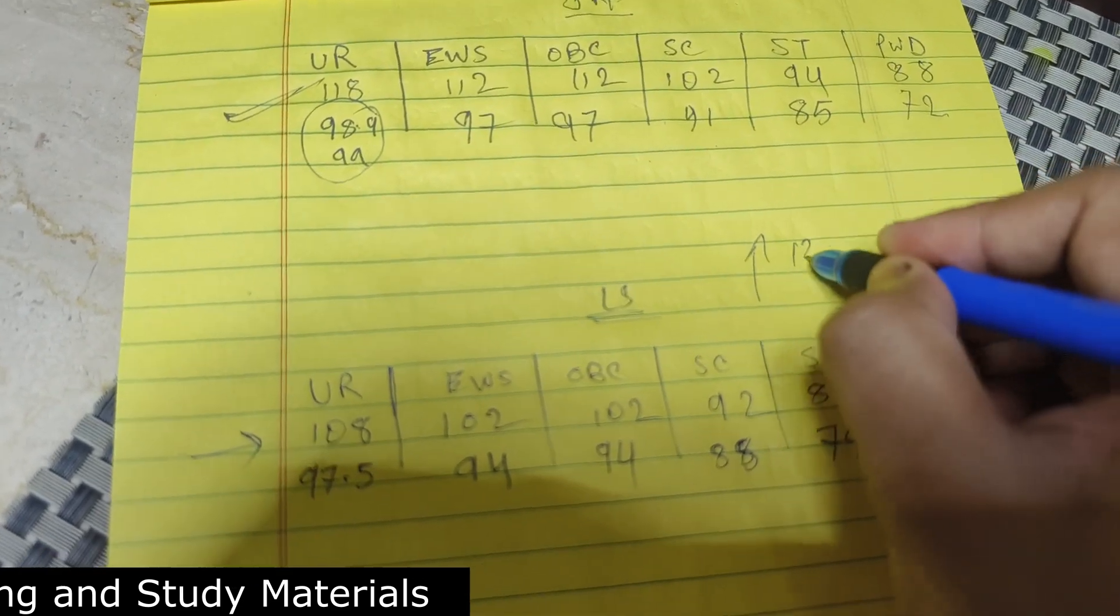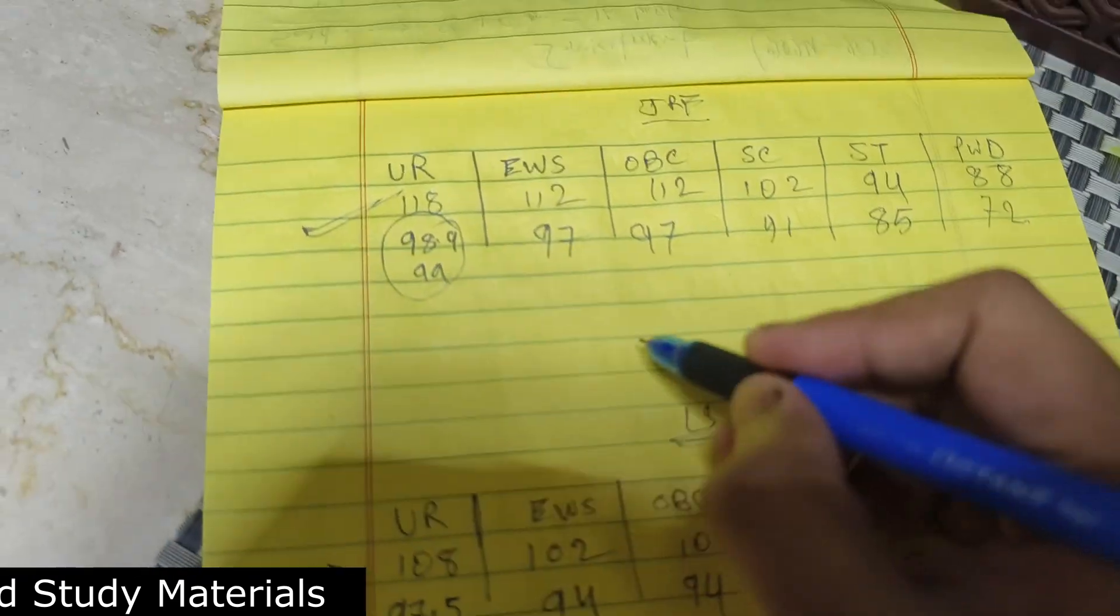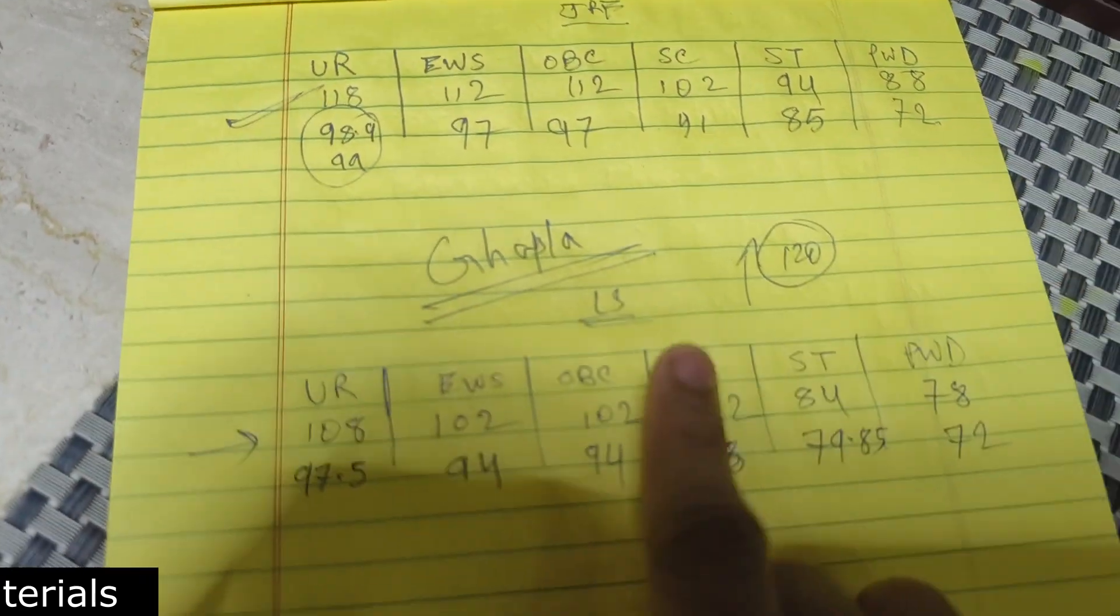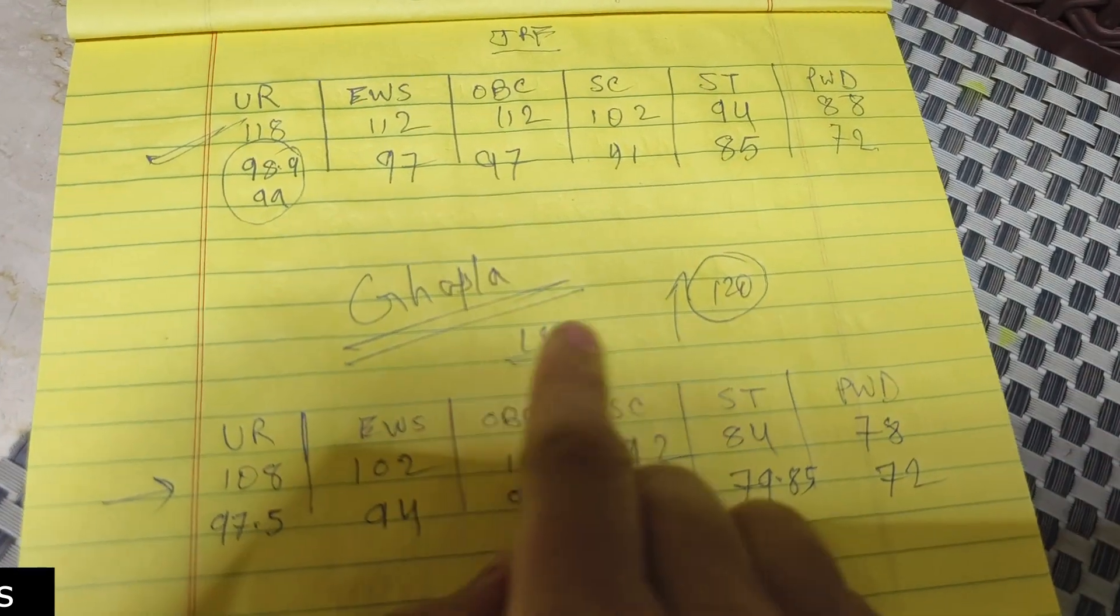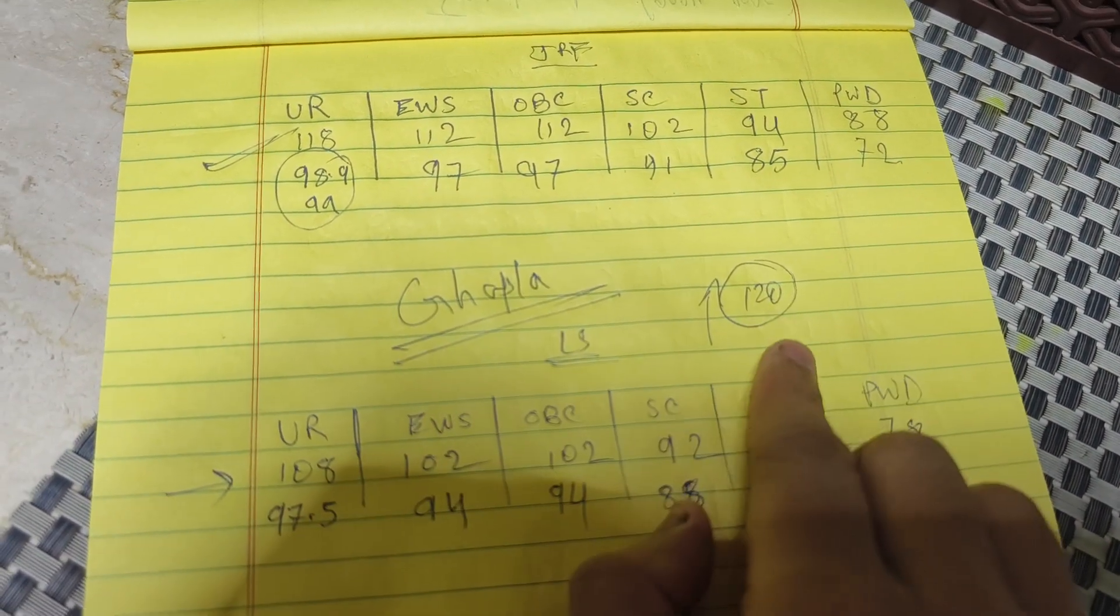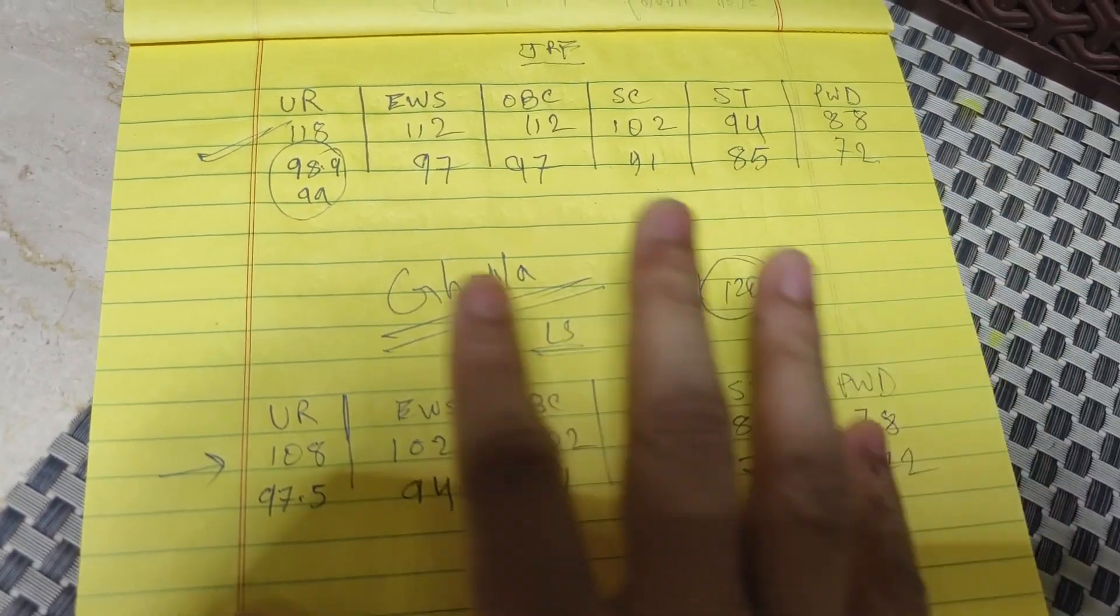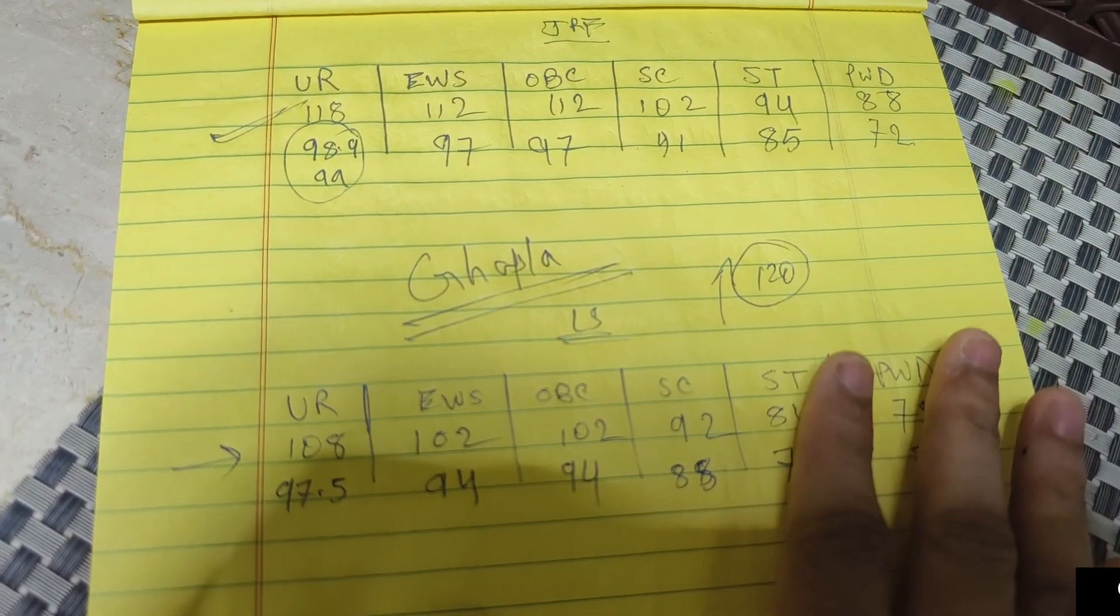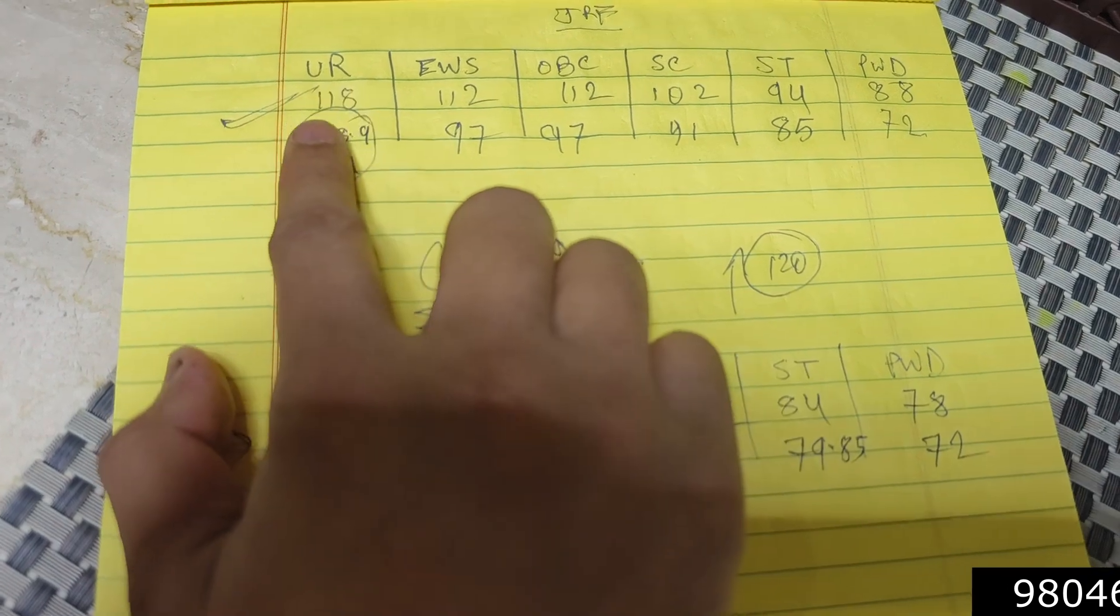then there's something wrong. This is important because if this happens, some people will score very high only then the cutoff will go above 120. Otherwise I've seen the question paper, it was moderate to difficult.